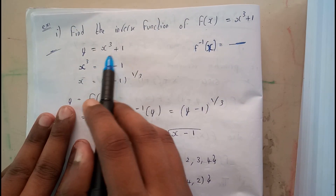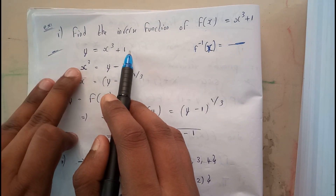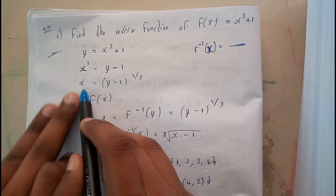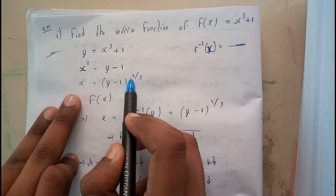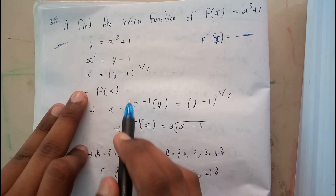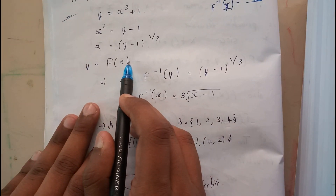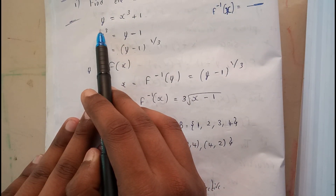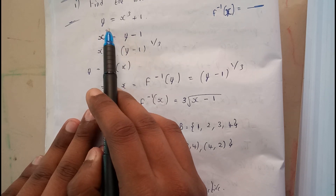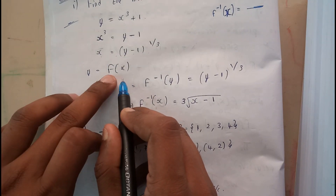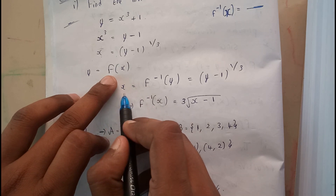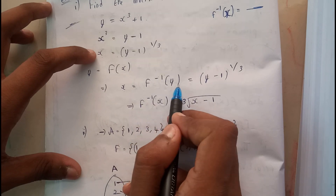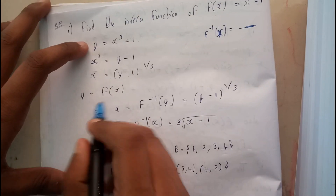So y is equal to x cube plus one. Slowly find the value of x: x cube is equal to y minus one, so x is equal to y minus one whole to the power one by three. Initially we assumed f of x as y, so y equals f of x, and we can write x equals f inverse of y.